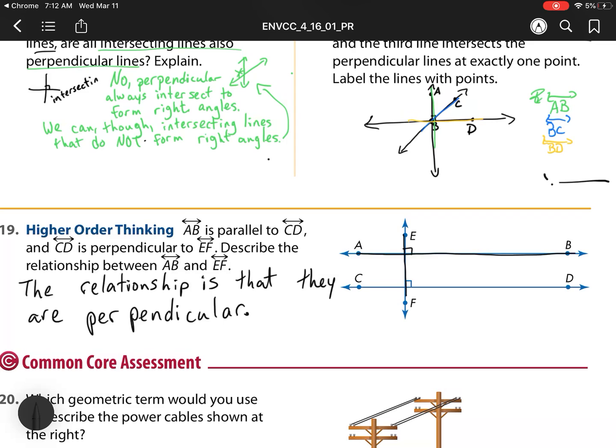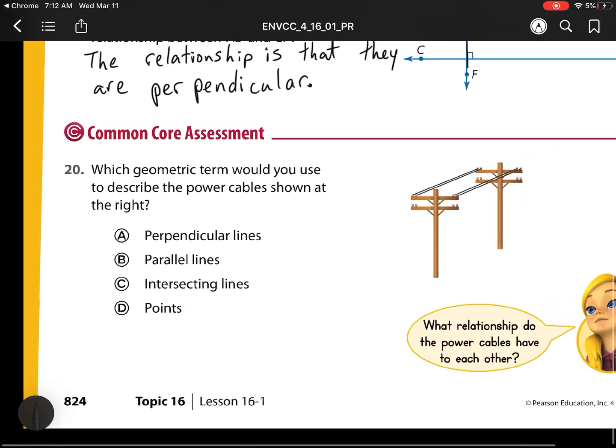And how do we know that? Well, since AB is parallel to CD, which is perpendicular to EF, AB is also perpendicular to EF. So since we have two parallel lines, and one is perpendicular to one parallel line, it must be perpendicular to the other parallel line.